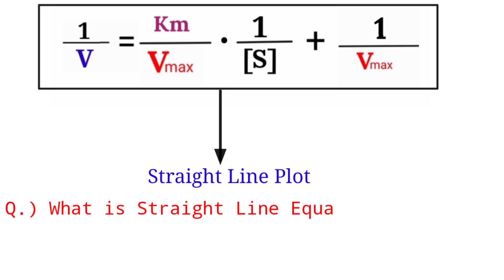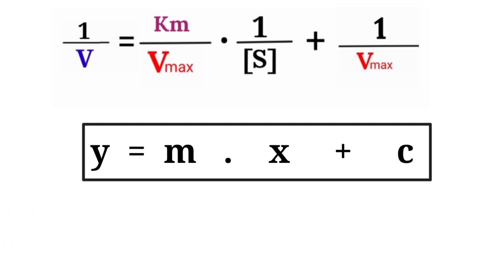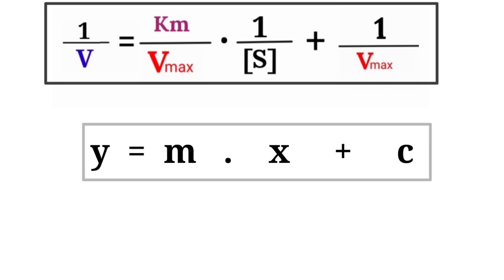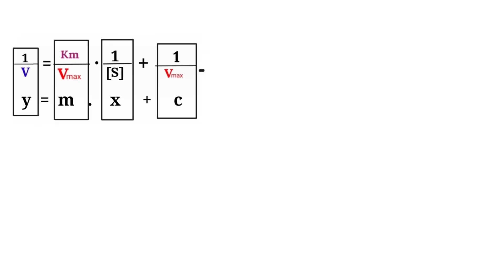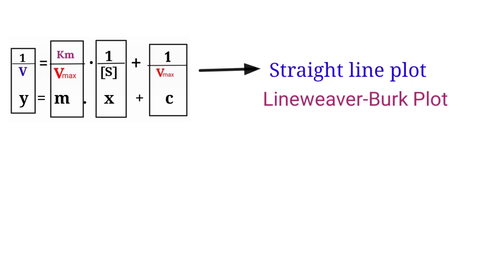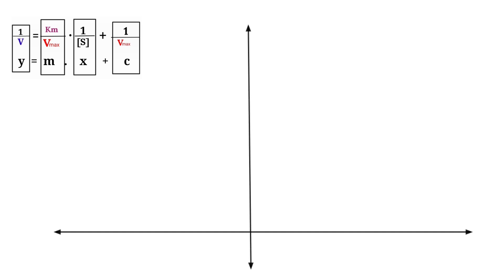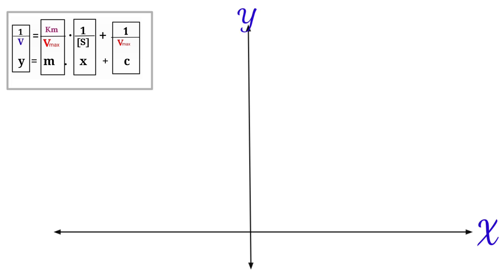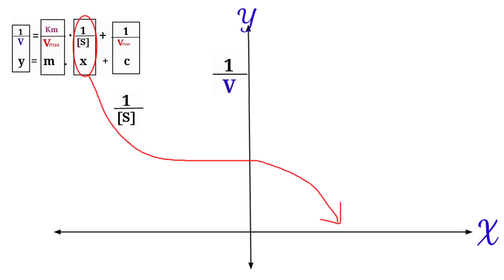What is the basic straight-line equation? It is y = mx + c. If you align the Lineweaver-Burk equation with y = mx + c, you can easily plot the Lineweaver-Burk plot. For drawing the plot we require x-axis and y-axis. From the Lineweaver-Burk equation, 1/v represents the y-axis value and 1/[S] represents the x-axis value.